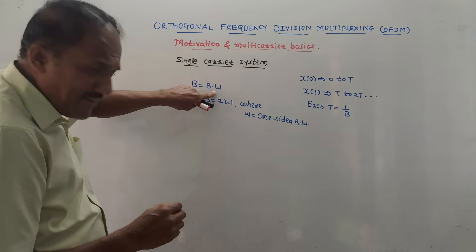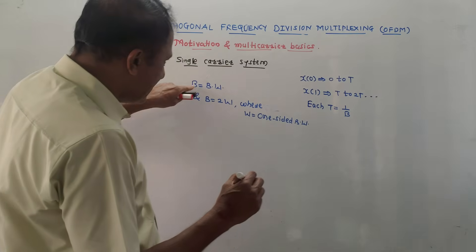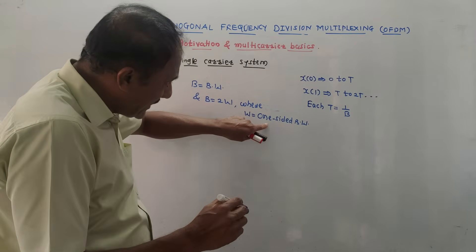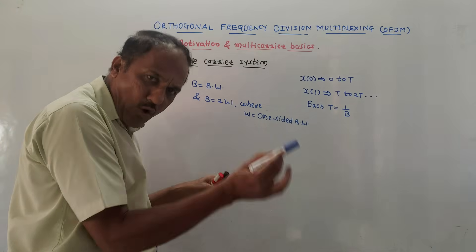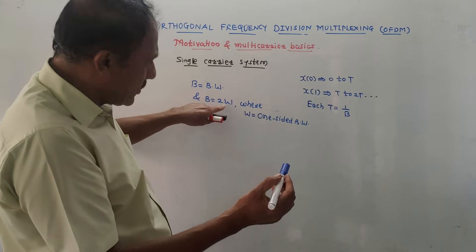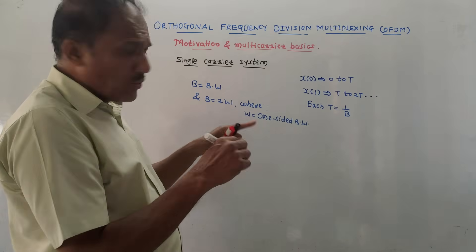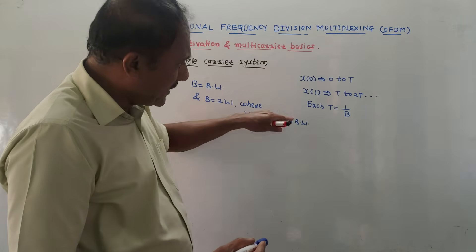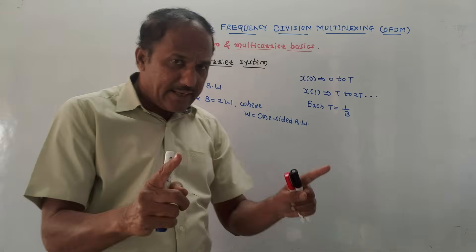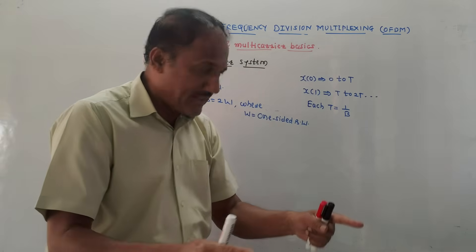Let us say B is the bandwidth of the system. We know that bandwidth is a range of frequencies. B is given as 2W, where W is the one-sided bandwidth, also called the maximum frequency. So bandwidth B equals 2W because W is one-sided. In a single carrier system, one symbol is transmitted for the entire bandwidth.